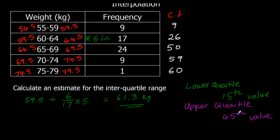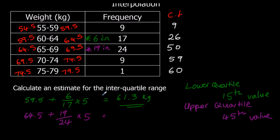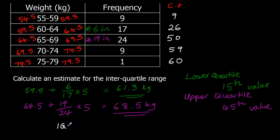For the upper quartile we're looking for the 45th value. We're at 9, then 26, then 50, so it must be in the third group. We're at 26 — how many from 26 to 45? That is 19, so 19 in. The lower class boundary is 64.5, plus 19 in out of 24, times the class width of 5. We get 68.5 to 3 significant figures, but I'll keep the whole number in the calculator. The interquartile range is the 68.5 answer take away the 61.3 answer, using the whole numbers each time.